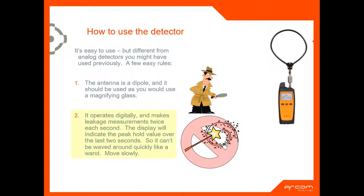Use this loop antenna like a magnifying glass, because it's reading the signal that's within the loop — just like we do with the source out in the field. The higher the reading, the closer you are to the source, and you're just looking for the peak. Don't use it like a metal detector. Don't swing it around wildly, because it is taking samples and we need about three positive samples — roughly a second and a half to two second lag. Dwell over connectors or the location and let it peak out, moving it about slowly.